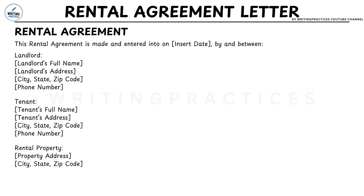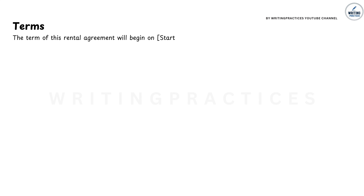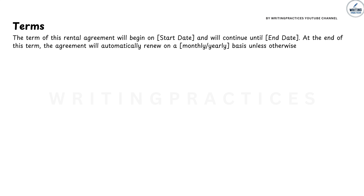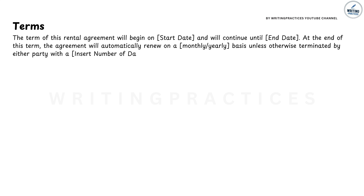Step 3: Defining the term of the lease. This section is all about how long the rental agreement will last. You can mention whether it's a monthly lease, a yearly lease, or a fixed period — such as from one specific date to another. It's also a good idea to state how the lease can be renewed, whether it will automatically renew month to month or require a new agreement. Be sure to include the notice period required if either party wants to terminate the lease early. This helps both the landlord and tenant know what to expect in terms of the length of the rental period.